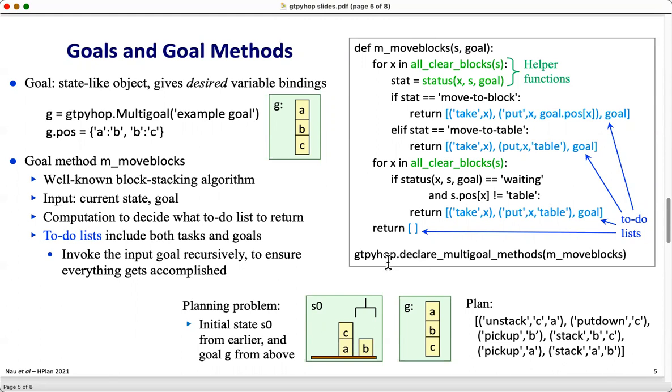Finally, at the end, we have a declaration that says that this is a method for goals. As an example, suppose we have the planning problem consisting of the initial state given earlier, this configuration of blocks, and the goal that was given above. If we use this goal method for that, it's going to produce the obvious plan.